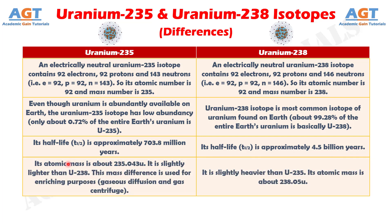Number 4. The atomic mass of Uranium-235 is about 235.043 unified atomic mass units. It is slightly lighter than Uranium-238, and this mass difference is used for enriching purposes, such as gaseous diffusion and gas centrifuge. Whereas Uranium-238 is slightly heavier than Uranium-235, with an atomic mass of about 238.05 unified atomic mass units.